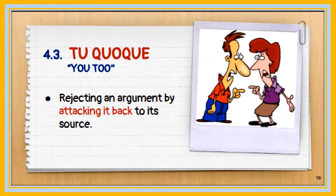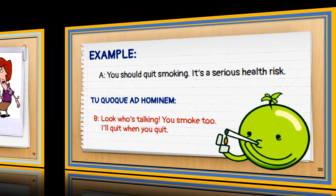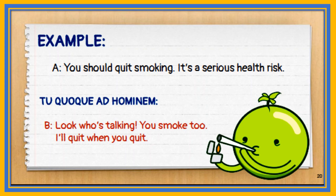The third subtype of ad hominem is the tu quoque, or the rejection of an argument by attacking it back to its source. For example, a doctor advises a patient to quit smoking because it is a serious health risk. The patient replied: 'Look who's talking. You smoke too. I'll quit when you quit.'